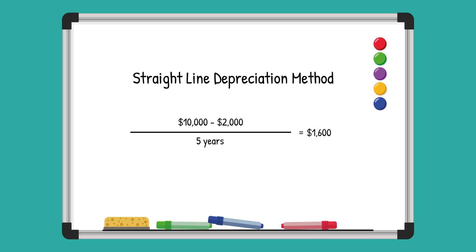In this case, that's $10,000 minus $2,000 divided by five. So the annual depreciation expense is $1,600. The company will record this amount each year for five years, and by the end of its useful life, the machine's book value equals its salvage value of $2,000. As you can see, this method is a simple yet effective way to handle depreciation.